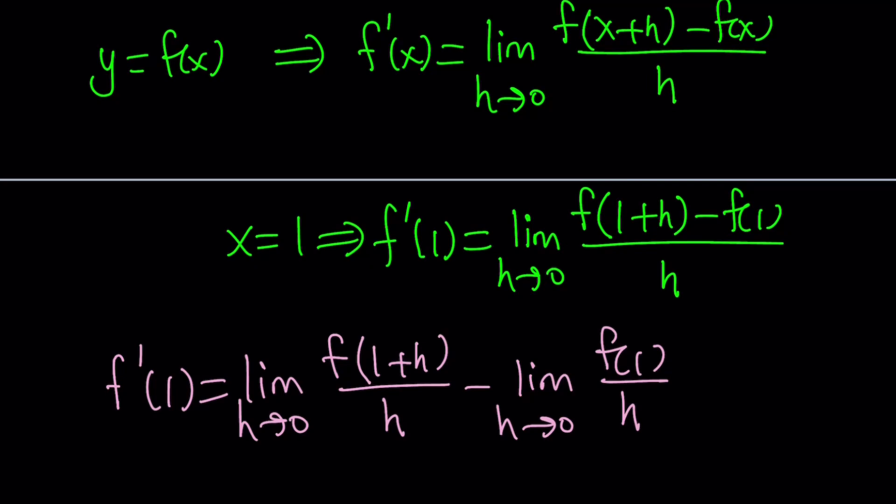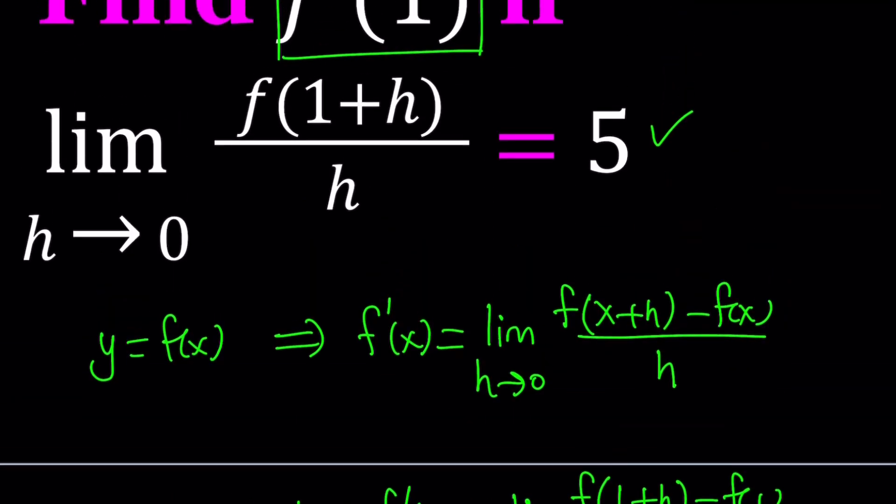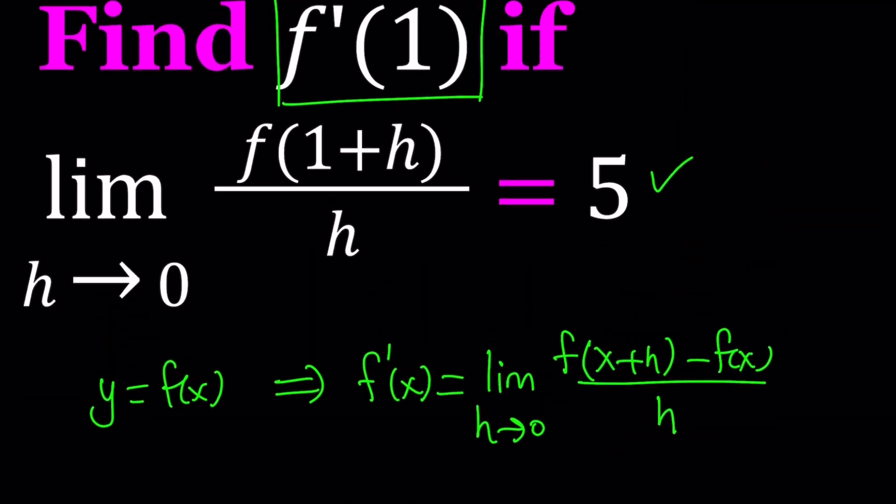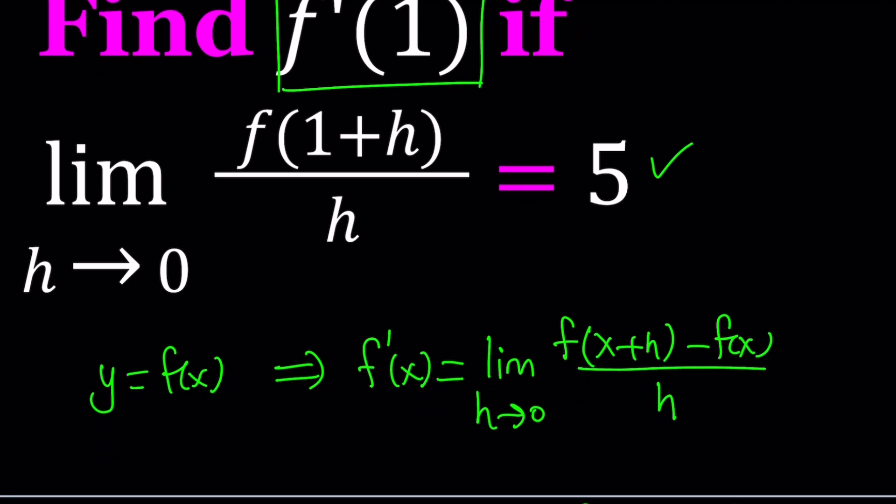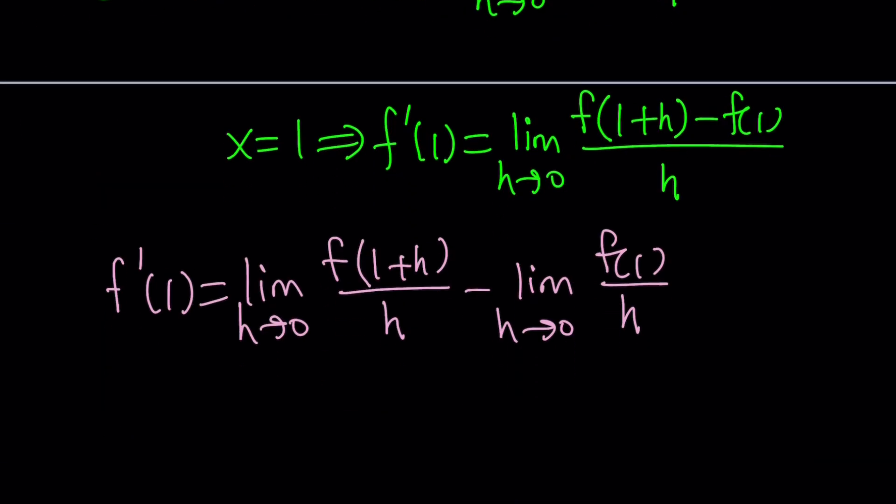So how does it help to separate these two expressions? We are given the first part. Limit as h approaches 0 of f of 1 plus h over h. This is 5. We do know that this is equal to 5, and we're trying to find this expression right here. We don't know what it is.